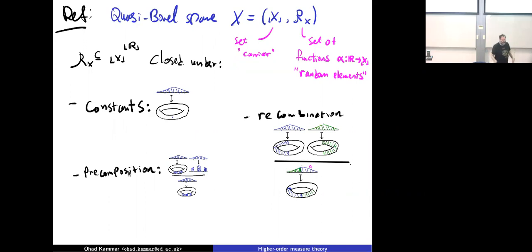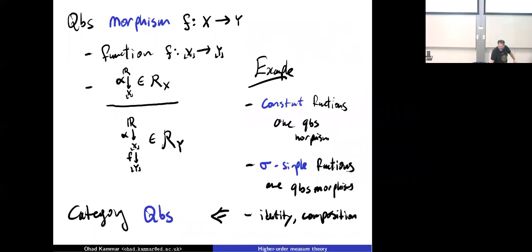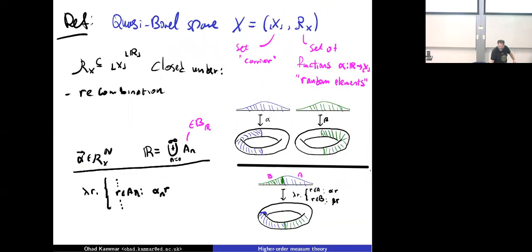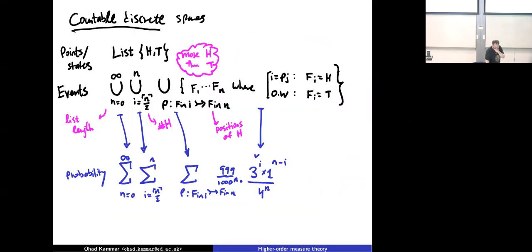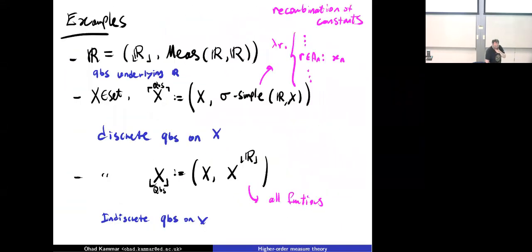Some people have geometric intuition — these pictures are for them. Some people have an algebraic definition — we can go there as well. These are just different ways of looking at the same mathematical gadget, and I'm trying to give you both options depending on which you prefer. These were the axioms, and then we looked at three kinds of examples.